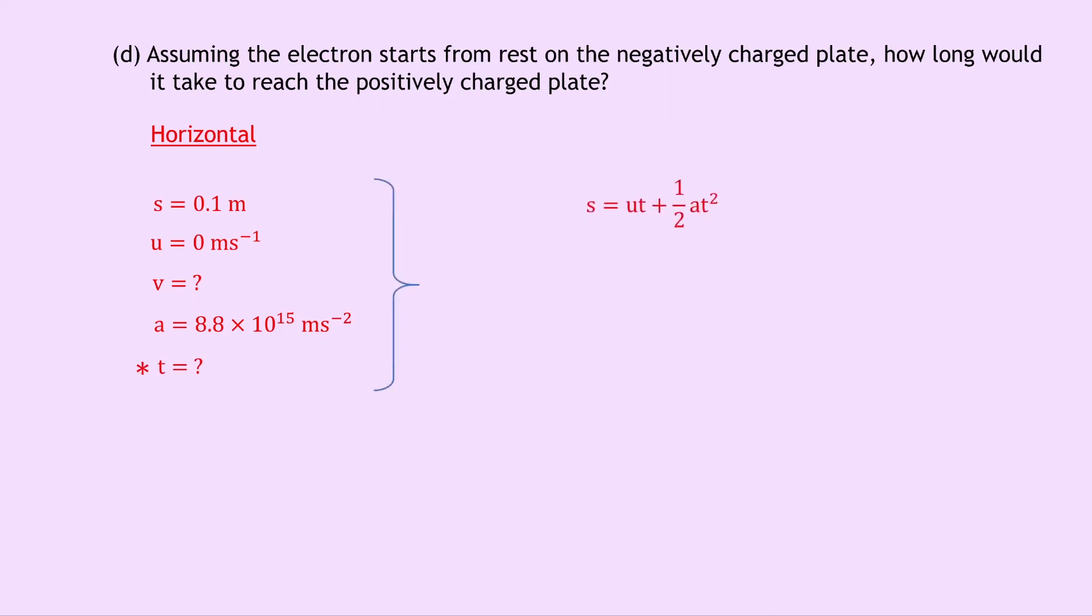We now need to use an equation of motion that does not have V in it. So we can use S equals UT plus 1 half AT squared. Substituting in the numbers gives us 0.1 equals 0 times T plus 1 half times 8.85 times 10 to the 15 times T squared. So notice that this term here with the 0 times T will just disappear, and we're left with T squared equals 0.2 divided by 8.8 times 10 to the 15. So all I've done there is multiply both sides by 2 to get rid of the half. And if you put that into your calculator, you'll get an answer 2.3 times 10 to the minus 17.